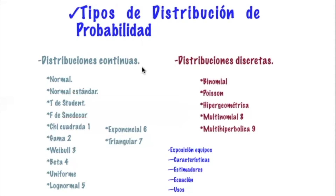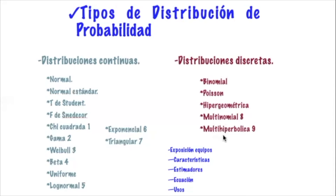Con respecto a estas definiciones, se les pide que se agrupen en los equipos ya formados anteriormente para exponer las características, los estimadores, la ecuación y el uso de cada distribución, con unos 20 minutos de exposición máximo. Yo voy a explicar la normal, la normal estándar, la T de Student y la F de Snedecor. Al equipo 1 le toca la chi cuadrada, al 2 gamma, al 3 Weibull, al 4 beta, al 5 log-normal, al 6 exponencial, al 7 triangular, al 8 multinomial y al 9 multihiperbólica.